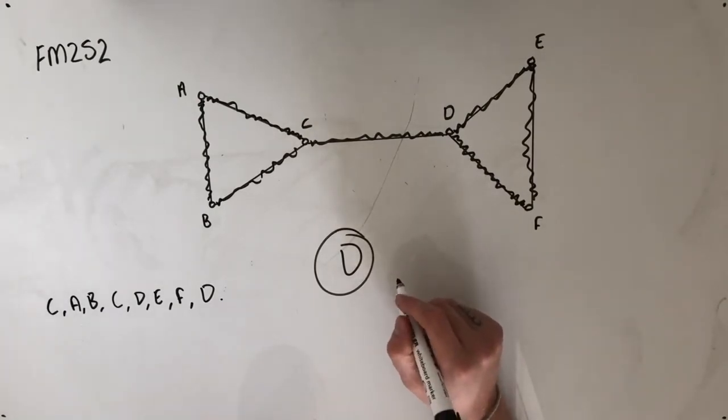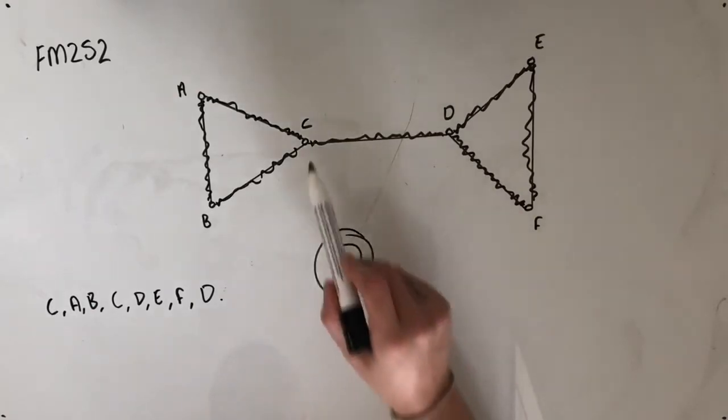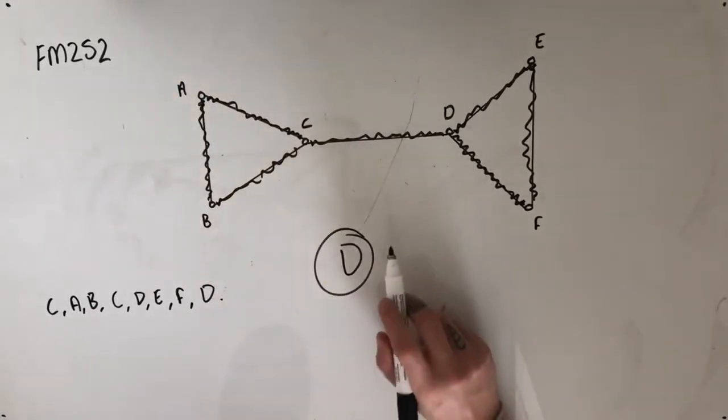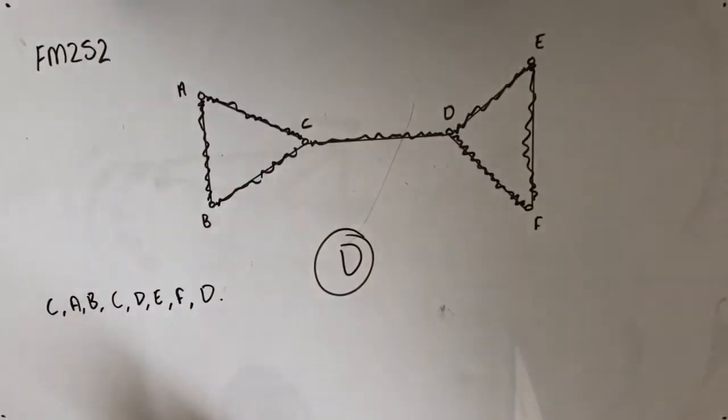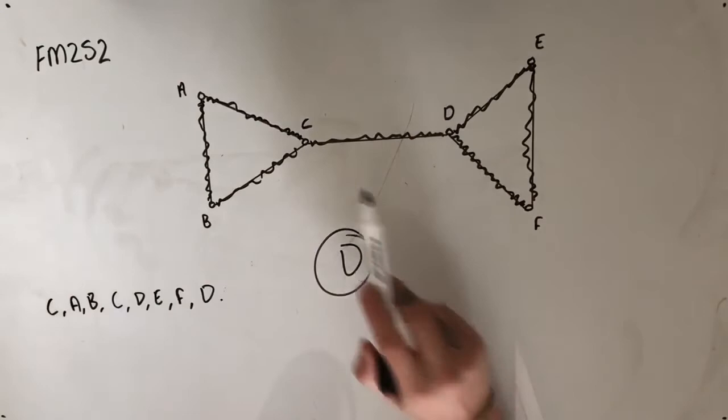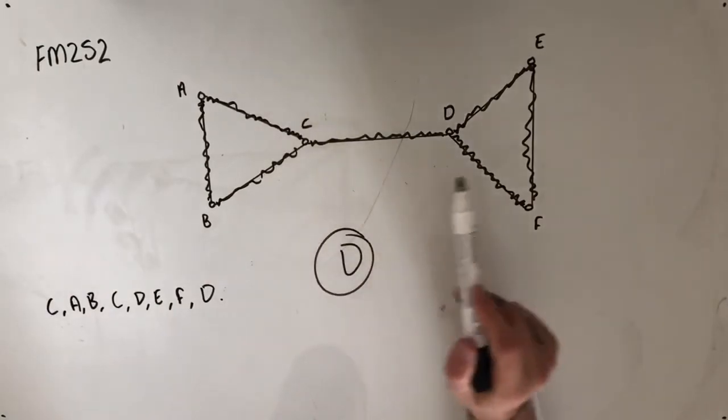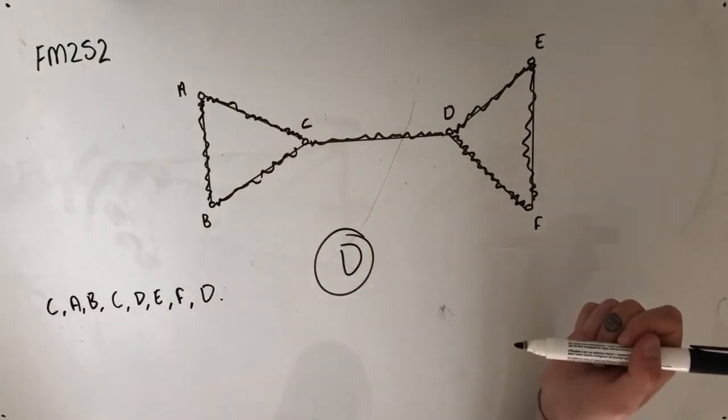A minimum spanning tree, of course, doesn't contain any circuits, and we don't really need to worry about paths when it comes to minimum spanning trees. The reason this is not an Eulerian circuit is because we've started at vertex C and finished at vertex D.